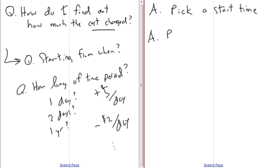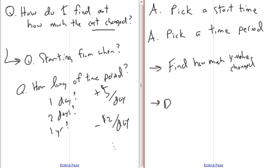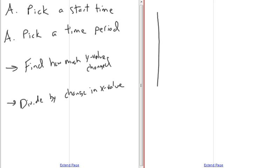So, when we're talking about how much it changed and we have a time period, normally we might say it changed $5 a day positive, or it dropped $2 a day over the last five days or something like that. So, here's how we're going to play this game. First, we're going to have to pick a start time. Then, we're going to have to pick some duration or pick a time period from that start time.